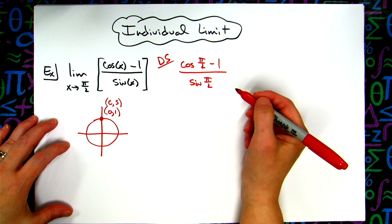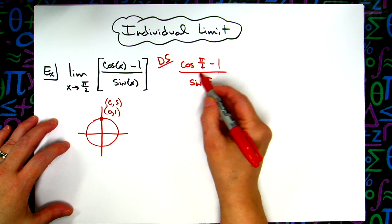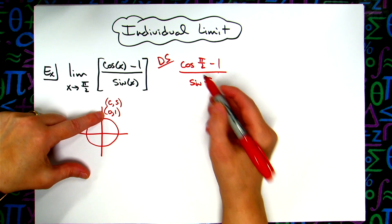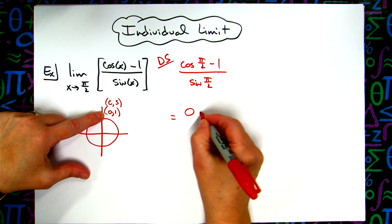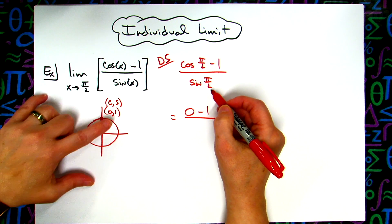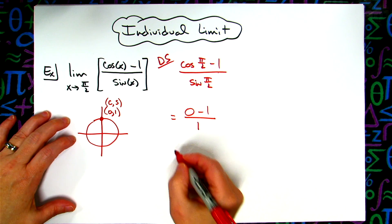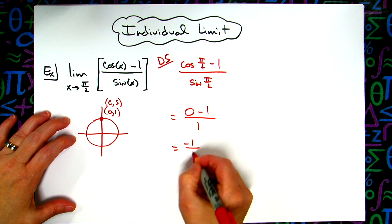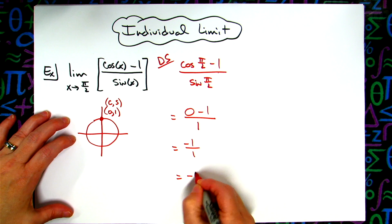So that lets you evaluate this pretty easy here. Cosine of pi over 2 is going to be 0 minus 1 on that top. Sine of pi over 2 is 1. So I'm going to have negative 1 over 1 which is going to give me negative 1.